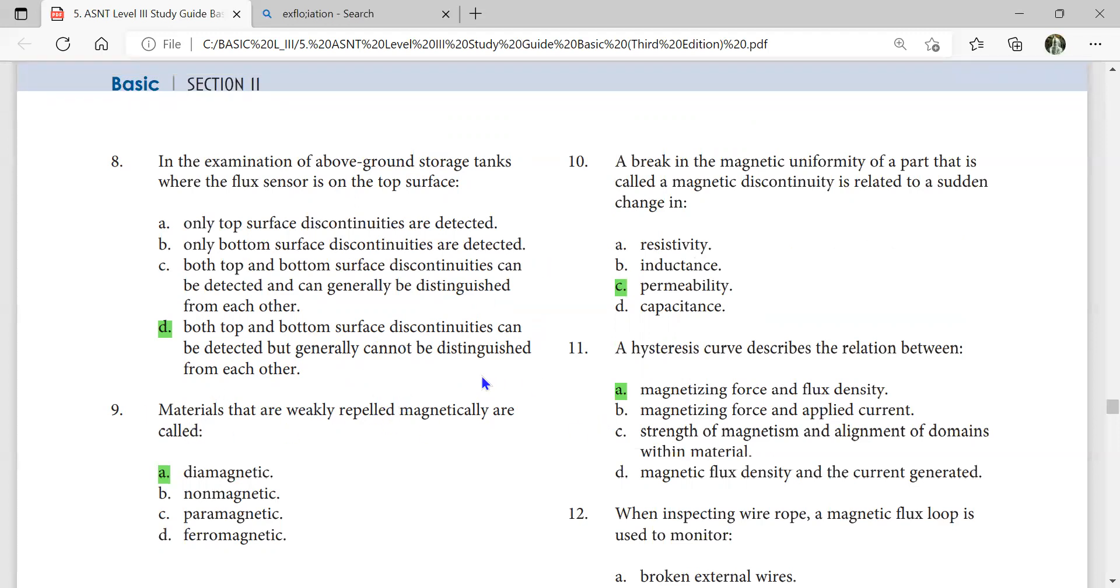Materials that are weakly repelled magnetically are called diamagnetic. They add eddy current and they name it STAR technology.